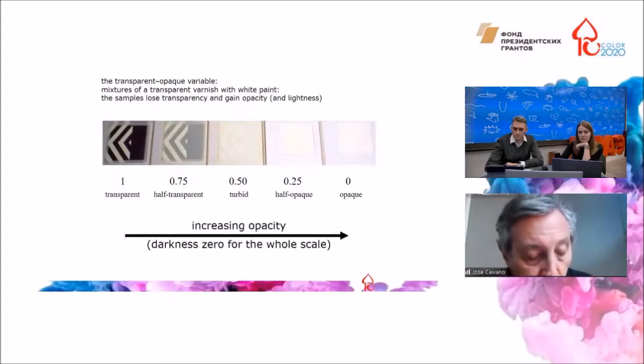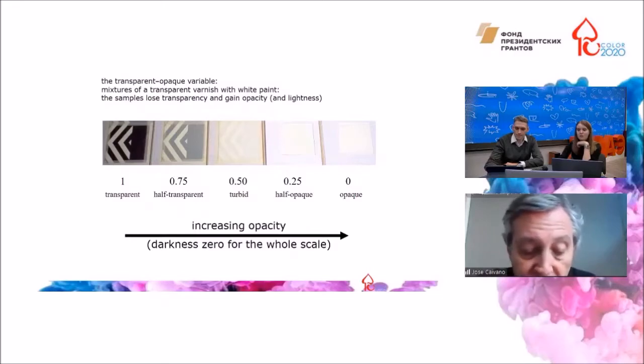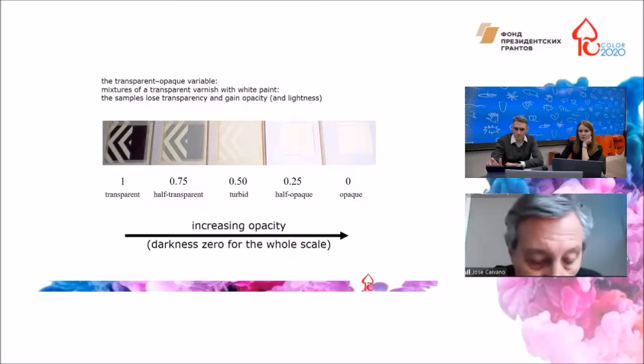Another possibility is to gradually mix the transparent varnish with white opaque paint. And in this way, the scale increases in opacity towards the right end, passing through intermediate translucent steps, but keeping the maximum lightness or darkness zero.